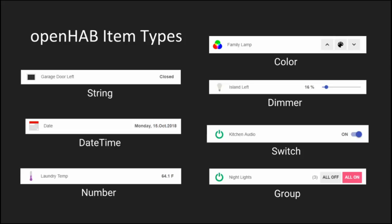Just like there are different types of variables in a computer program, there are different types of items for all the different types of data they need to store. A string item stores a basic character string. A date-time item is a slightly different example that specifically stores time values. A number item stores numerical data — for example, sensor temperature. Color items store color data — for example, the hue bulb color. Dimmer items store percentage values — for example, bulb brightness or audio volume. And switch items store the on-off position of a switch.